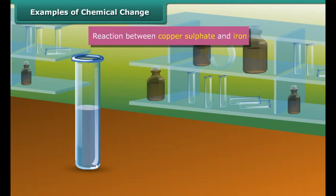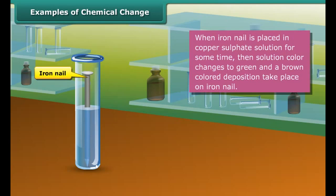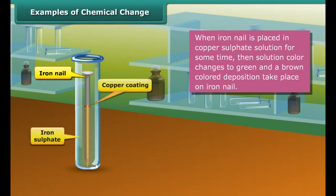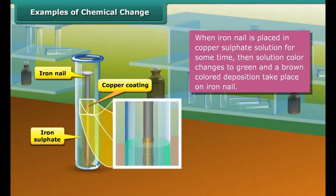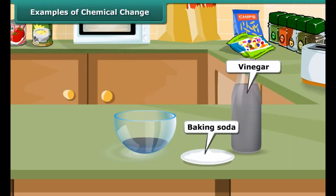You will see a blue colored solution. Put an iron nail in it. After some time, the color of the solution changes to green and the nail is covered by a brown film. These changes are due to the formation of iron sulfate solution and copper.